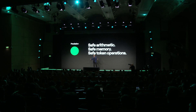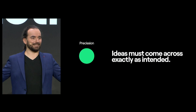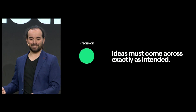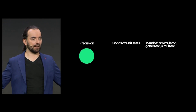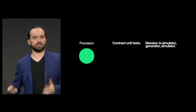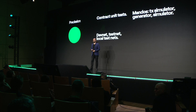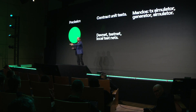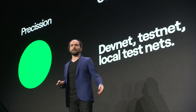This leads me to talk about precision. What does it mean for a language to be precise? It means that ideas must come across exactly as intended — no bugs, no vulnerabilities, no exploits. Every serious project has to come jam-packed with unit tests, and we offer great support for that. We also want integration tests, and for this we have something called the Mandos framework — basically a transaction simulator that also comes packed with a debugger and the ability to generate tests. Then you have the public devnet, the public testnet, and a local testnet you can run on your own machine, and you can run various scripts to deploy and test your contract, written in anything you want — Python, TypeScript, Rust, with many more to come.